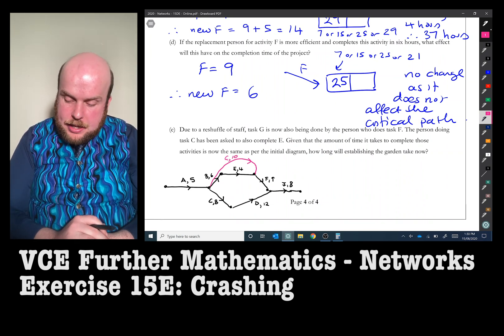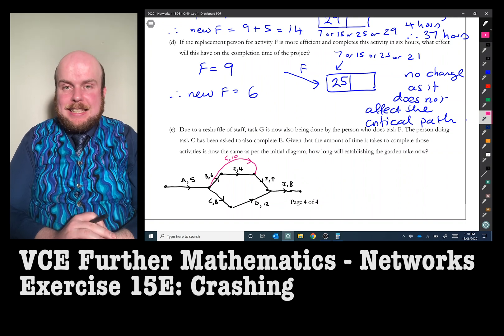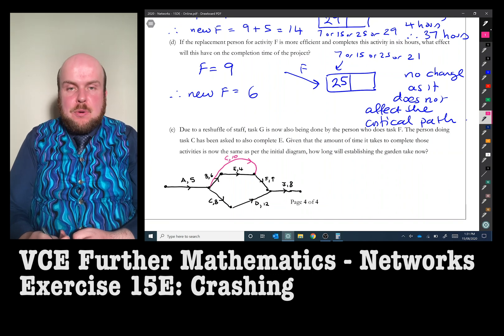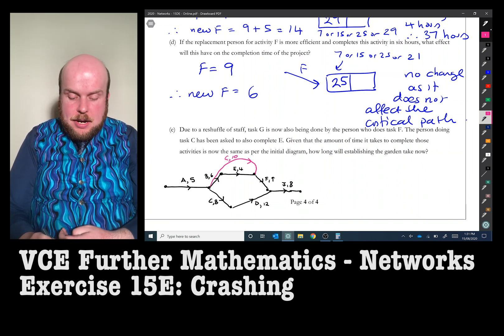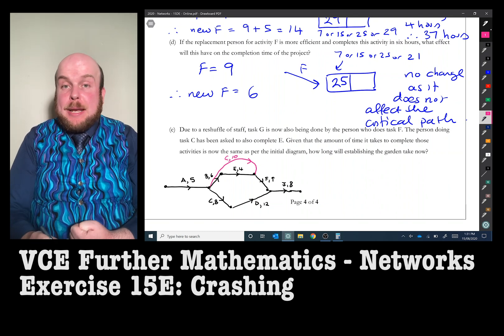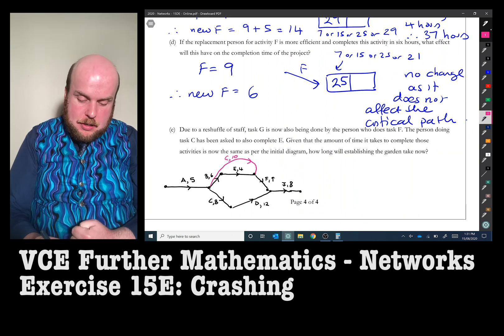It also says there that the person doing task C has been asked to also complete task E. So in other words, the predecessor to E has to also be C. Now, you might notice there that if I bend C up to attach to E, I will now get a parallel edge, which we can't have. So what we're going to do is put a dummy in here.